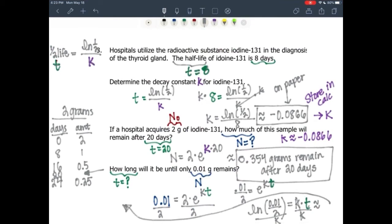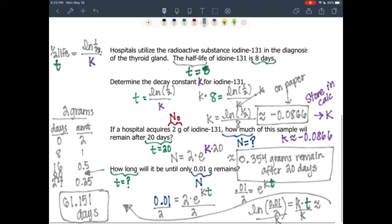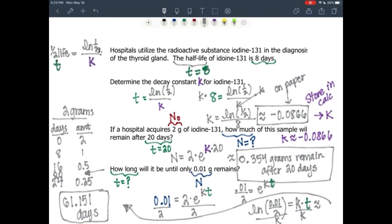61.151. Now what were we solving for? Time. We were solving for time. Time is equal to, or approximately—I've got more room over here—61.151 days. Now if you did not use the stored value and you were using negative 0.0866 for k, you would have gotten 61.181 days. I got 61.151 days. Close, very close. Those two numbers are very close, so we're good. But this is the exact value: 61.151 days.